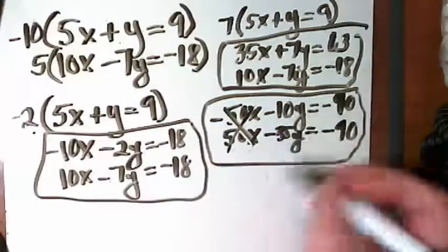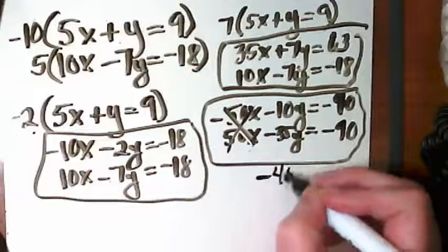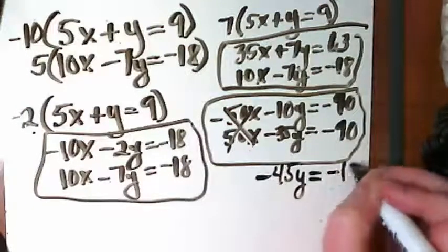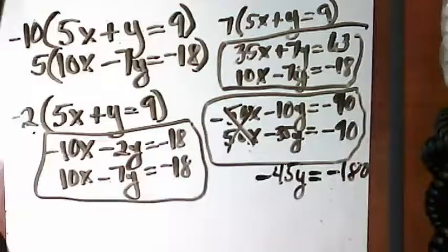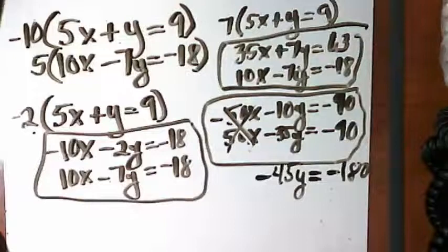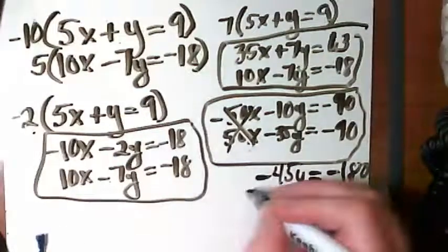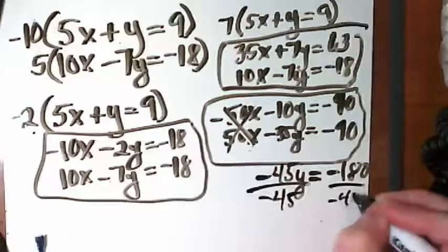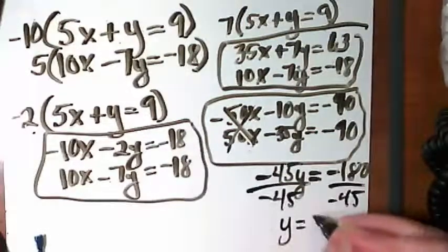These are going to eliminate. I'm going to end up with negative 45y is equal to negative 180. 180 divided by 45 gives us 4. So y equals 4.